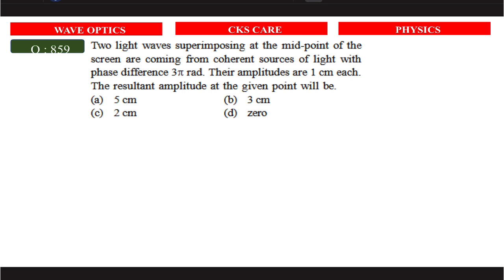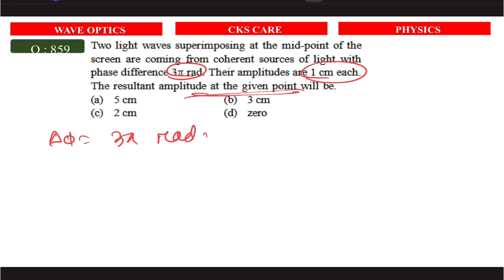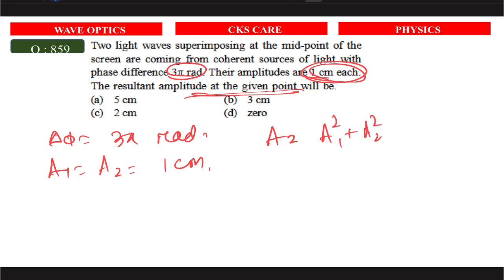Question 859: two light waves superimposing at the midpoint of the screen are from coherent sources with phase difference 3π radians. Their amplitude is h each. The resultant amplitude uses: A_resultant = √(A1² + A2² + 2·A1·A2·cos φ), where φ = 3π.